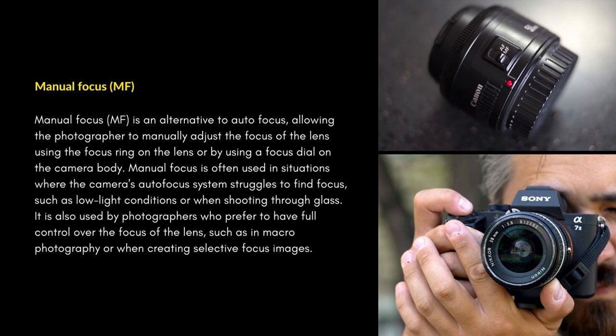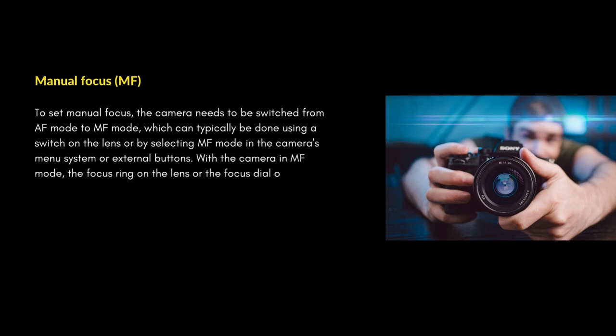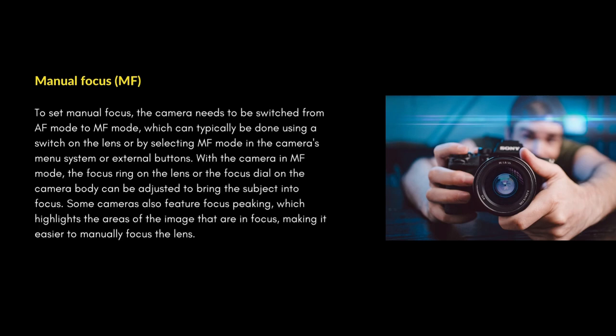It is also used by photographers who prefer to have full control over the focus, such as in macro photography or when creating selective focus images. To set manual focus, the camera needs to be switched from auto mode to manual mode, which can typically be done using a switch on the lens or by selecting manual mode in the camera's menu system or external buttons.